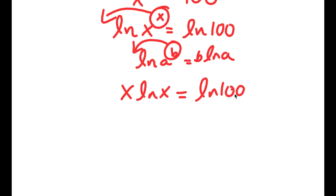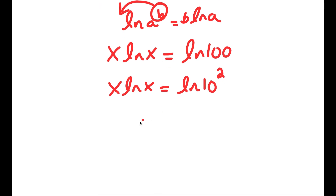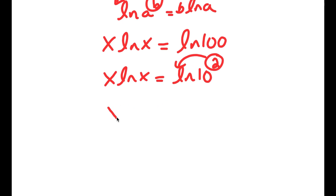Now, ln 100 is the same thing as ln of 10 squared. So I get x times ln x is equal to ln 10 squared. And again, I can move 2 to the front, so I get x times ln x is equal to 2 times ln 10.